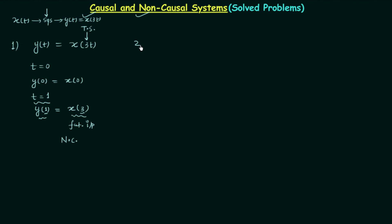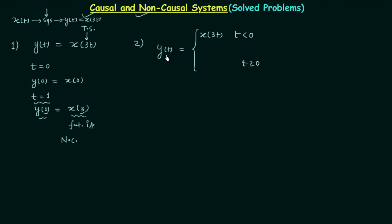Now we will move to the second problem. In the second problem, y(t) is defined piecewise: when t is less than 0, y(t) equals x(3t), and when t is greater than or equal to 0, y(t) equals x(t-1).